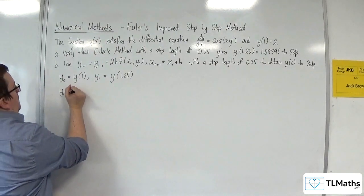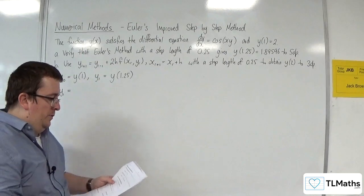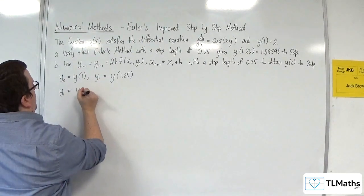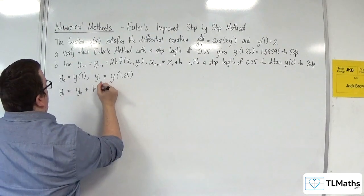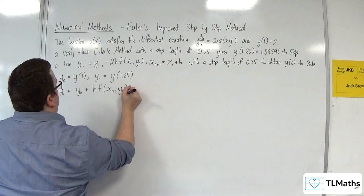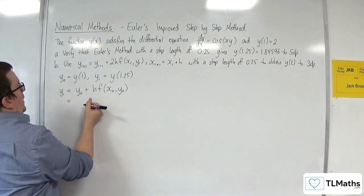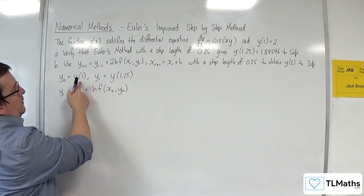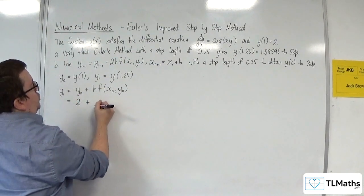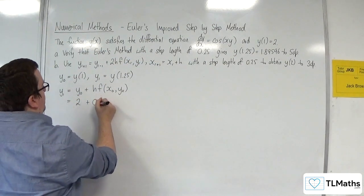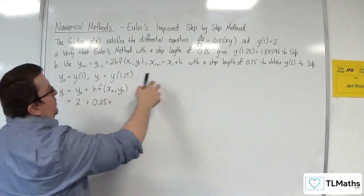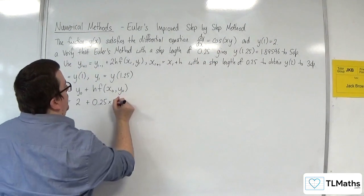So y1 is equal to, using the formula in the formula booklet, we will have y0 plus h times f of x0, y0. So y of 1 we know as 2, h is 0.25, and we're substituting x0, y0 into cosine of xy.